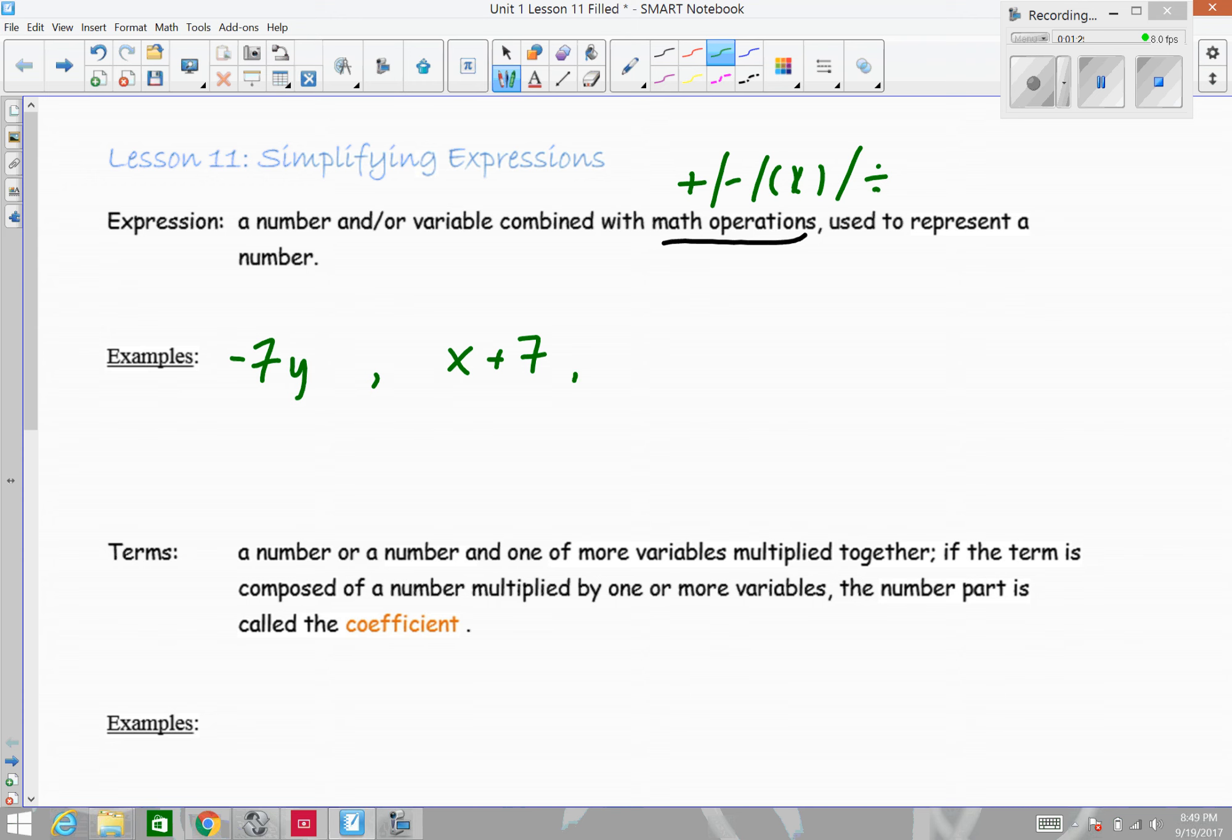Or we could have more than one operation going on, so something like 2t minus 9 combines a 2 and a t through multiplication, and a 9 through subtraction. We could have 4st minus 1/4 s, that's an expression, and I've got some numbers multiplied by two variables, s and t, combined through subtraction with a division, 1 over 4, and that multiplied by s. So each of these are expressions.